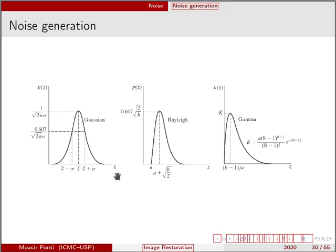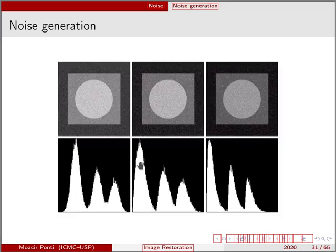We could also simulate noise by using other distributions such as the Rayleigh distribution that follows this shape of the distribution, or a gamma distribution that also appears in some practical scenarios. And then the image will have different characteristics.